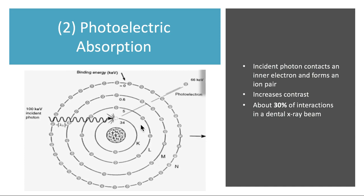The lower energy photons are very relevant here. If your kVp is too low, you'll get more photoelectric absorption and you'll have a lighter image with increased contrast. This is because too much photoelectric absorption involves low energy photons, meaning image density will be low and image contrast will be high. This interaction accounts for about 30% of photon interactions in a dental x-ray beam.